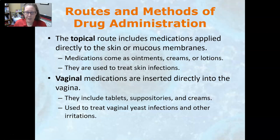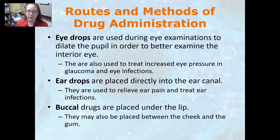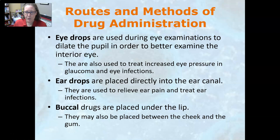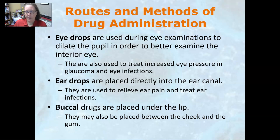Vaginal medications are inserted directly into the vagina and are usually used to treat yeast infections or other irritations; they can include tablets, suppositories, and creams. Eye drops are used during eye examinations to dilate the pupil for better examination of the interior of the eye, and are also used to treat increased eye pressure in glaucoma and eye infections. Ear drops are placed directly into the ear canal and are used to relieve ear pain and treat ear infections.